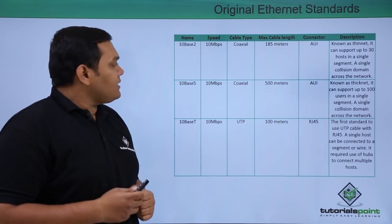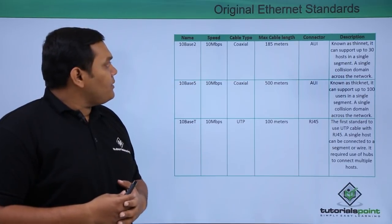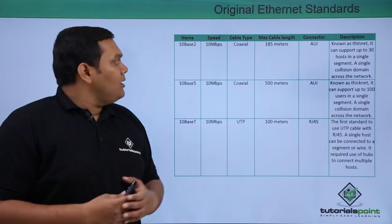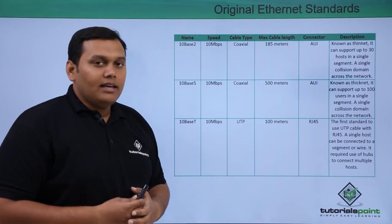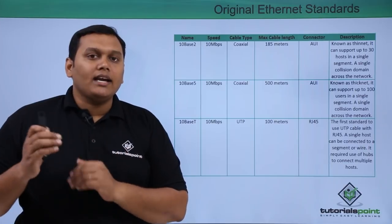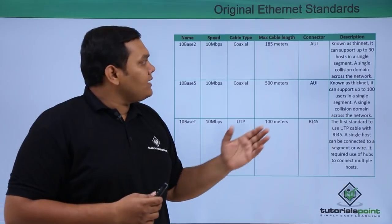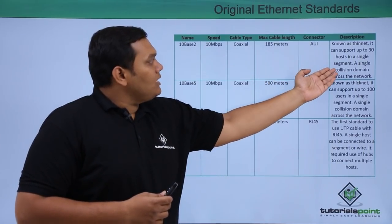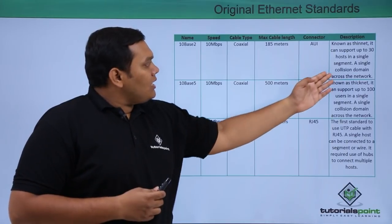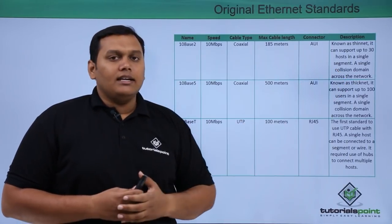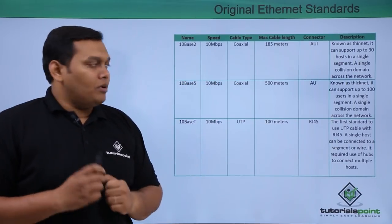The first cable is 10Base2, with a speed of 10 Mbps and a coaxial cable type. It has a maximum length of 185 meters, connects via an AUI connector, and is known as Thinnet. It can support up to 30 hosts in a single segment, meaning a single collision domain.